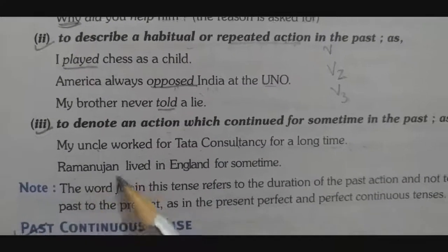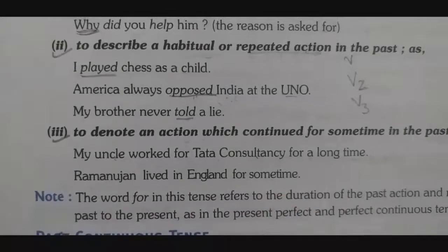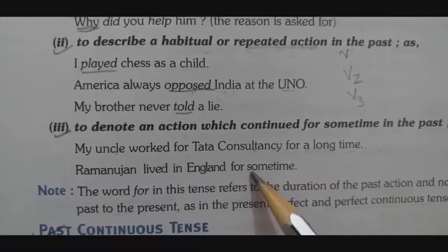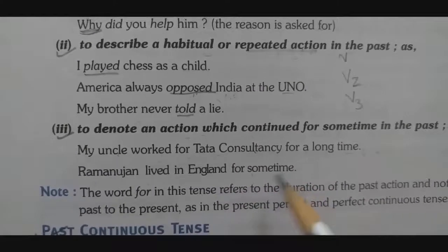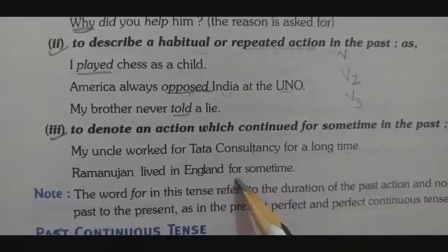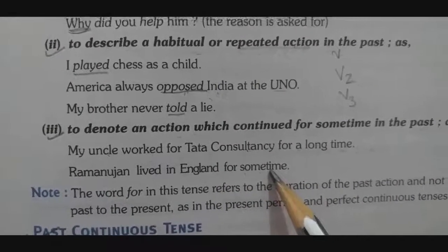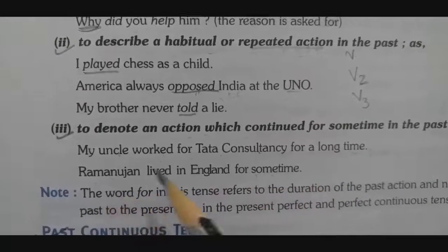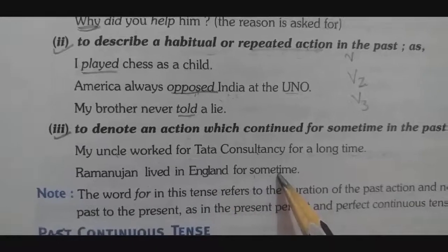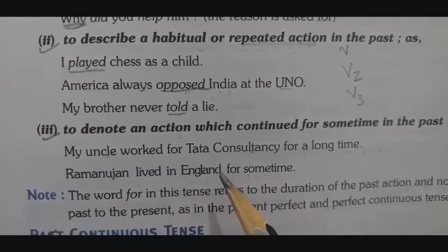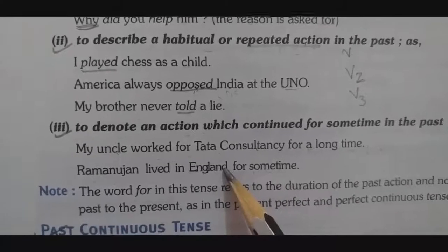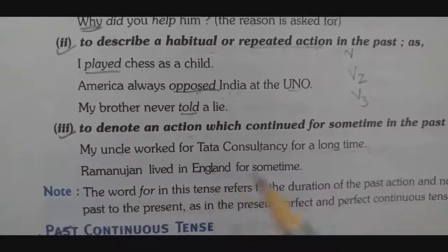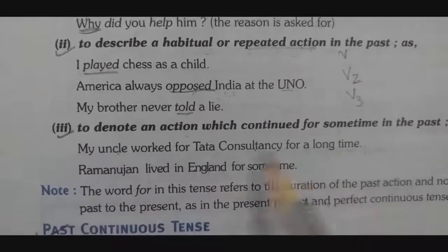Another example: 'Ramanujan lived in England for some time.' Ramanujan was living in England for some years. This was in the past, not now. Note: the word 'for' in this tense refers to the duration of the past action, not a period from the past to the present.